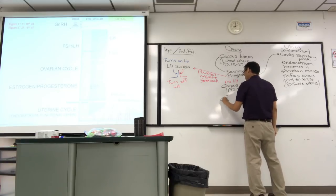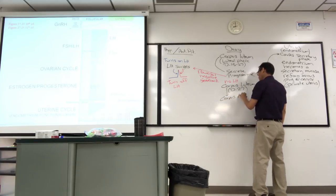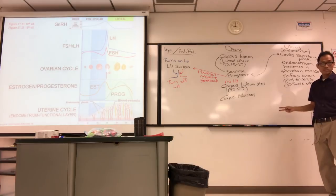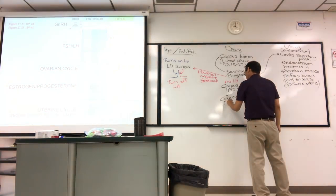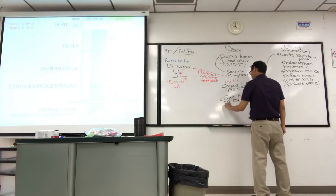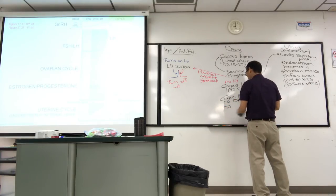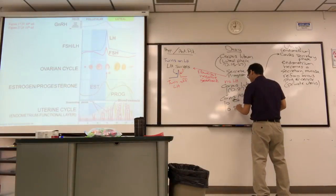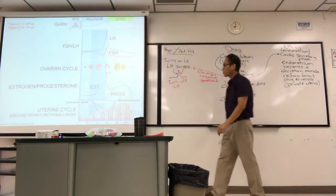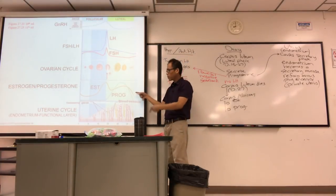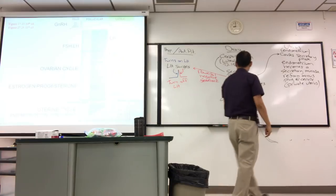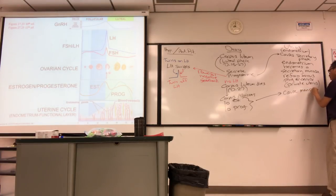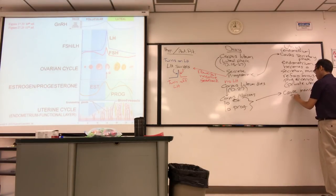With no LH, the corpus luteum dies at around day 27 — it becomes the white scar, corpus albicans — fibrous scar tissue. Now there are low levels of sex hormones: no progesterone, no estrogen. We're back where we started. Those hormone levels crash, causing menses at day 28.